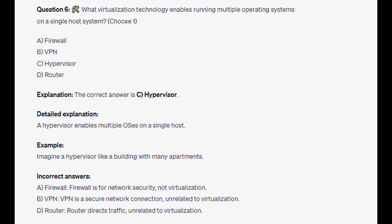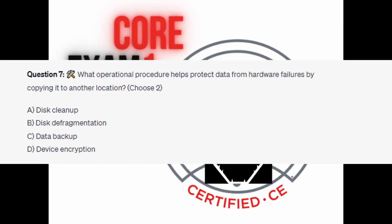Imagine a hypervisor like a building with multiple apartments. And for the incorrect answers: Firewall is for network security, not virtualization. VPN is a secured network connection, unrelated to virtualization. And router directs traffic, unrelated to virtualization.